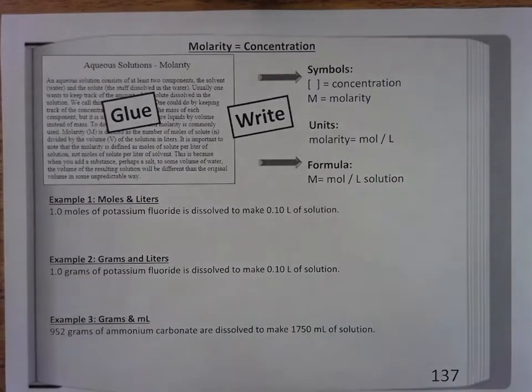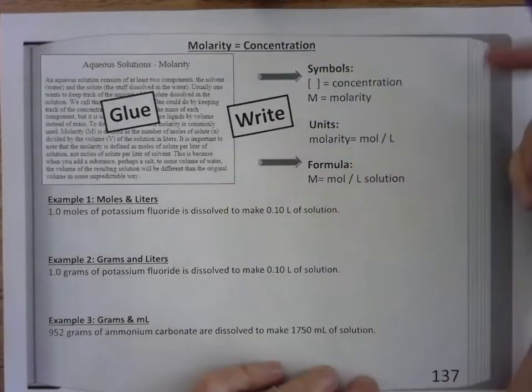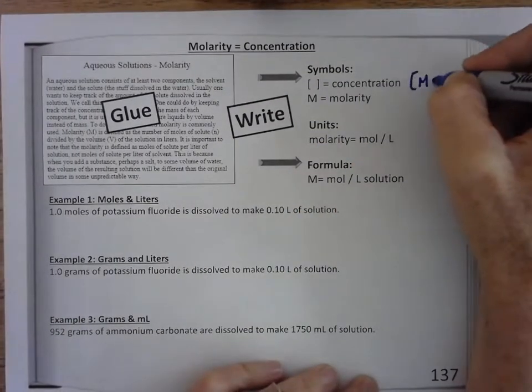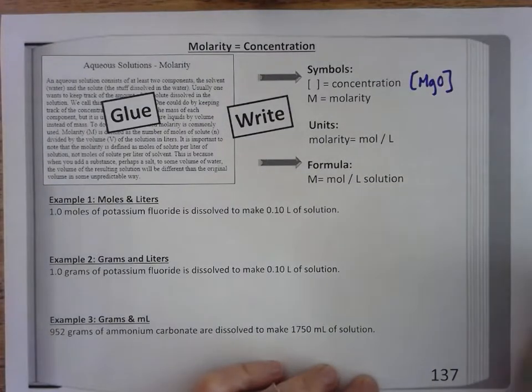Here are some symbols. These brackets mean concentration. So if you see a chemical in brackets, it says the concentration of that chemical.